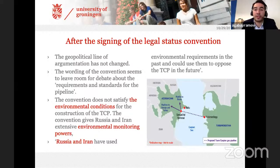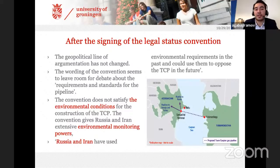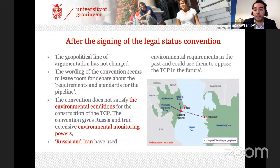After signing the legal status, geopolitical literature started to use environmental agreements. When we look at the Caspian legal agreement, it includes several lines about environmental cooperation and requirements for pipeline construction. Immediately after signing, geopolitical literature argued again that these environmental articles will give Russia and Iran powerful tools to block possible pipeline cooperation between Turkmenistan, Azerbaijan, and Kazakhstan. They also argued that the convention doesn't satisfy environmental conditions for construction of the Trans-Caspian pipeline.